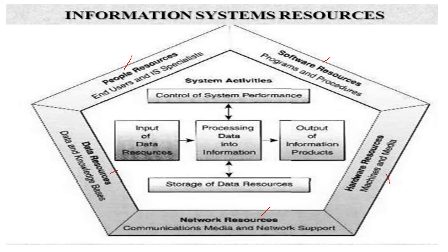People resources include end users and IS specialists — the people from whom you collect data or enquiries. Software resources are based on programs and procedures. Hardware refers to the physical components. Network resources include communication media and network support. And data resources refer to data and knowledge bases — for everything, data should be there, so it is also a kind of resource.